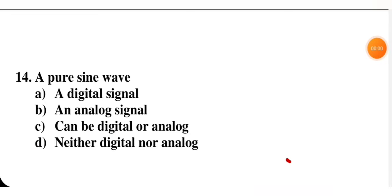Next question: a pure sine wave is — a digital signal, an analog signal, can be digital or analog, or neither digital nor analog. A sine wave is an analog signal, so B is the right option.